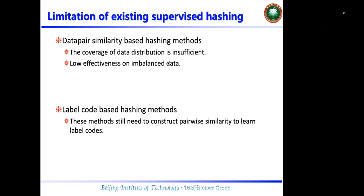Without defining the data pair similarity, label code-based hashing methods usually use the label information to generate the label hash code, and then use the label hash code to guide the learning process of the image hash network.